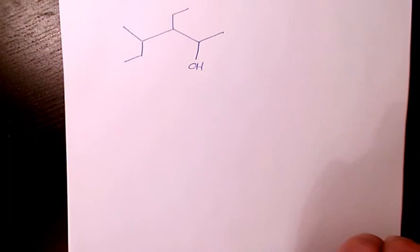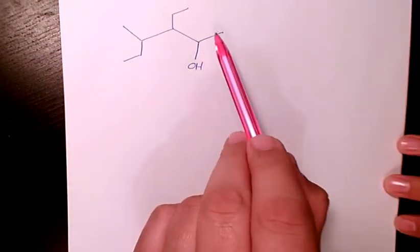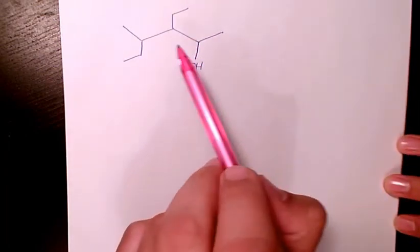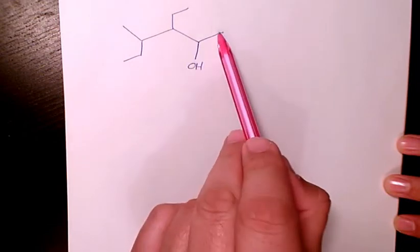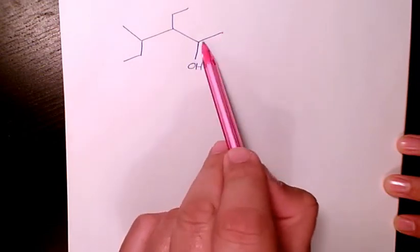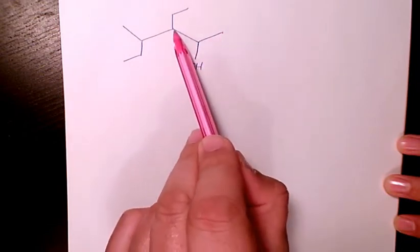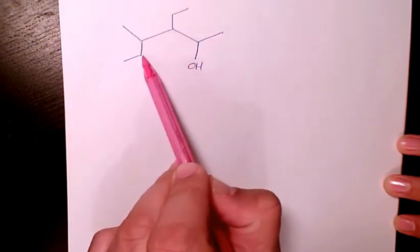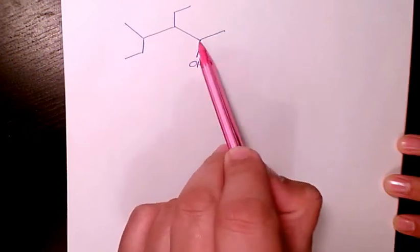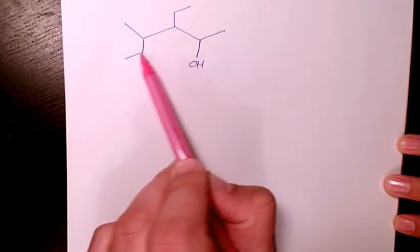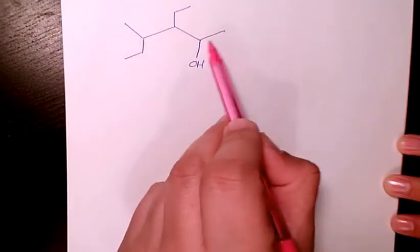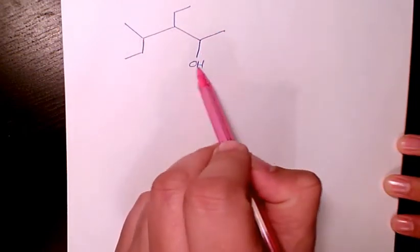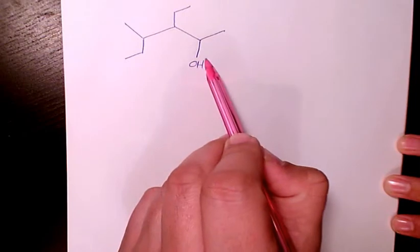Let's find out the main branch. The main branch can be this one. Let's number them — we need to start from this side because this one has to have the smallest number.